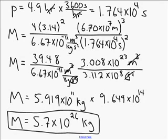If you're doing this on your homework, you would still need to write this answer in a complete sentence. So something like, the mass of Saturn is 5.7 times 10 to the 26 kilograms. And we're done. Good job.